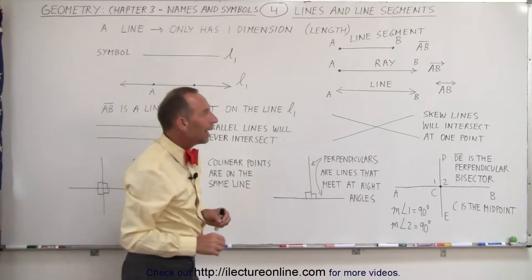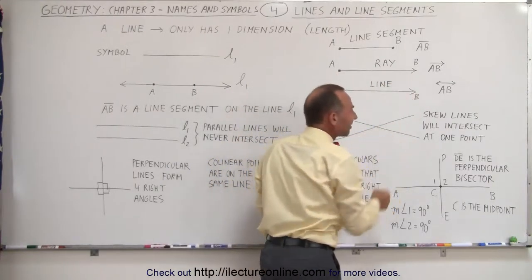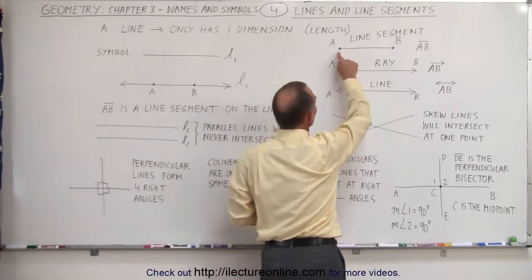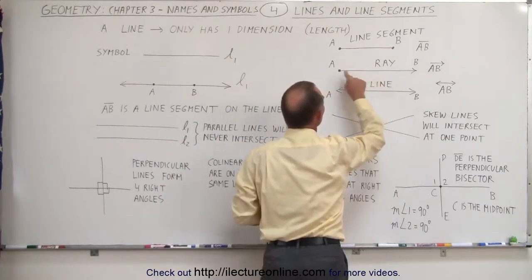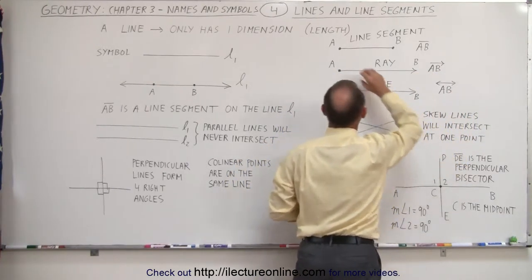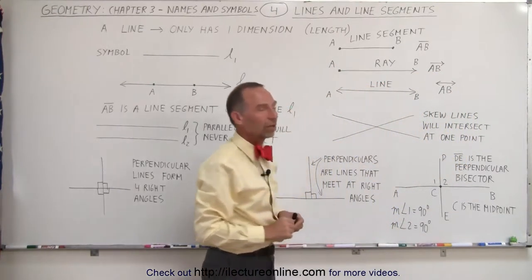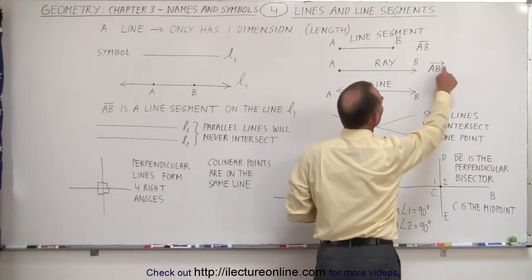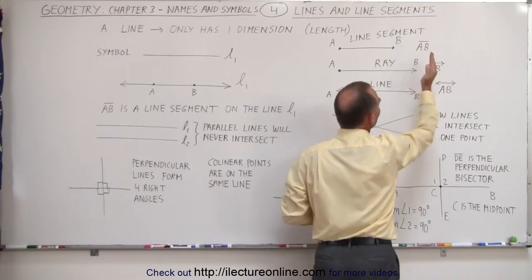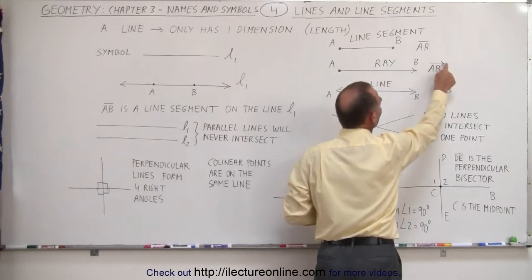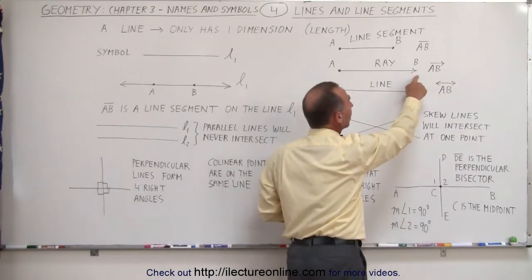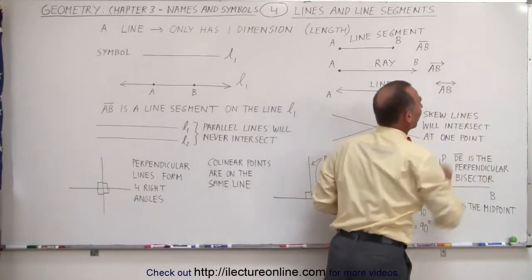A ray has a starting point but no end point. It's somewhere between a line and a line segment. Just like a line segment has a start and end point, a ray has a start point but no end point, meaning it goes on forever in one direction but has a starting point in the other direction. We write the symbol AB with an arrow on top. On the left, we don't have an arrow - that's where it starts. But on B, we have a little arrow, which means it doesn't end there, it just keeps going forever.